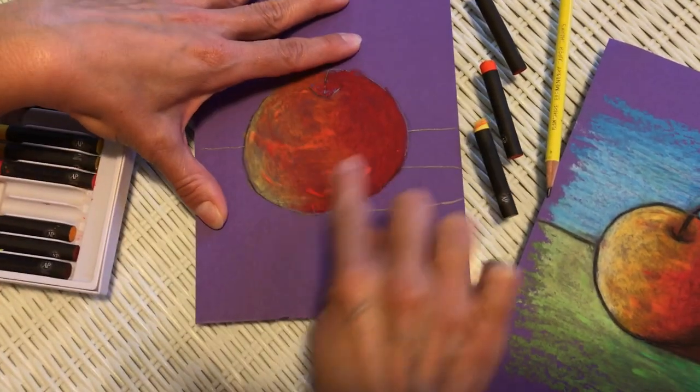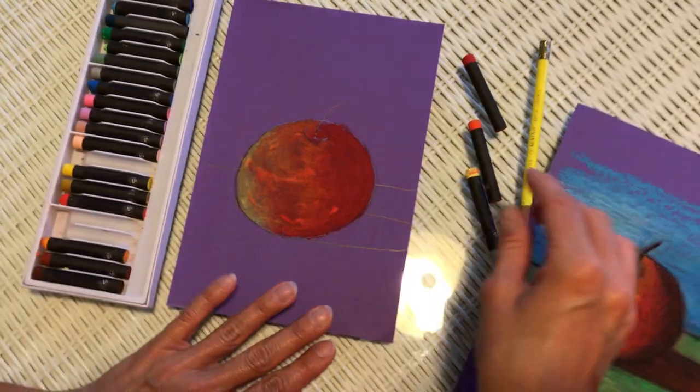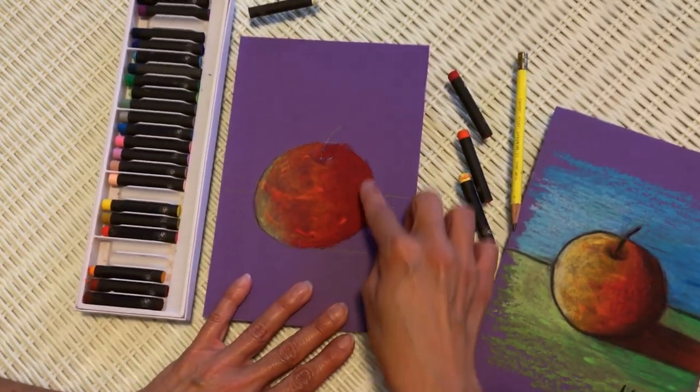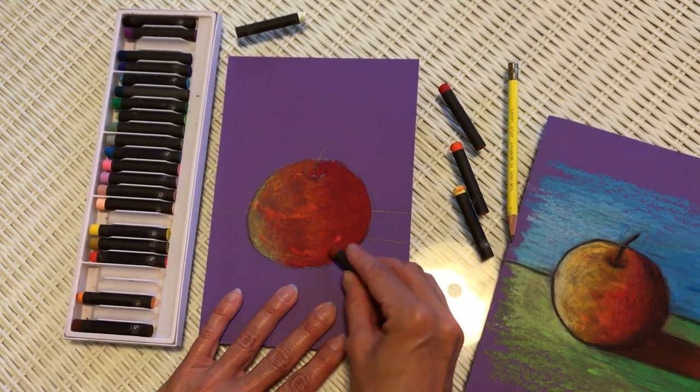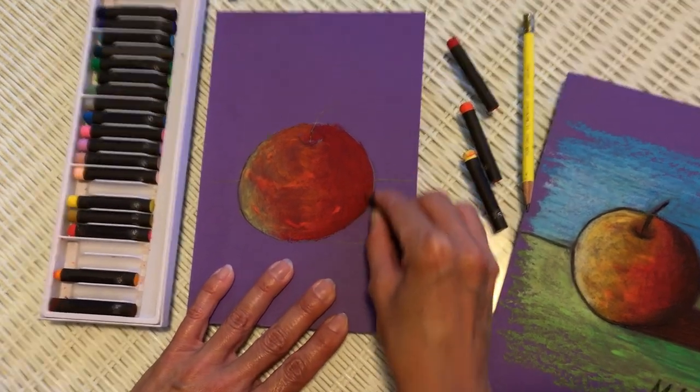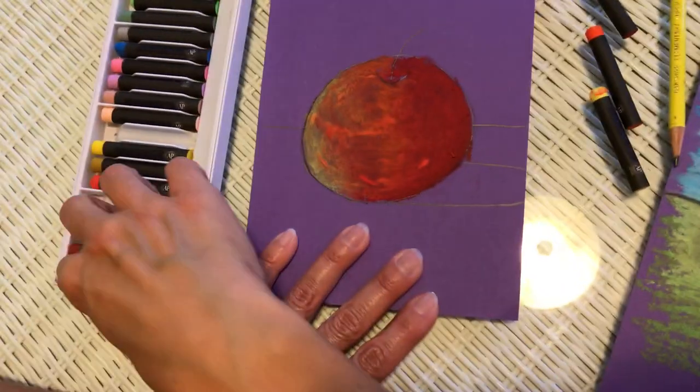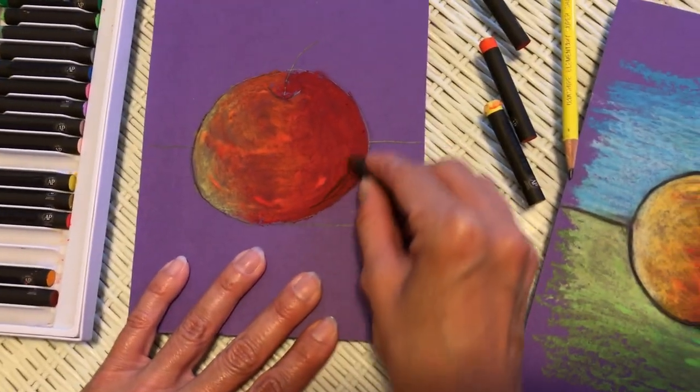Now I want to add a little bit more dark on this side so I can even use a brown. Provide a little bit more darkness. Maybe something a little darker than this.